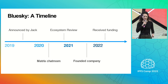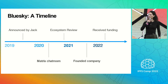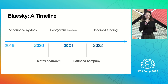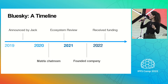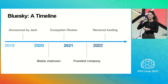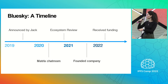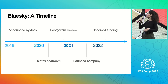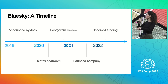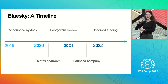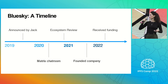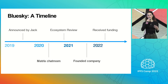In 2019, Jack Dorsey, the then-CEO of Twitter, announced that Twitter was going to be funding a decentralized social protocol. They brought together some outside collaborators in a Matrix chat room, and this included myself. During this time, we produced an ecosystem review, and then in 2021, they selected me to lead my vision of the project for Blue Sky.